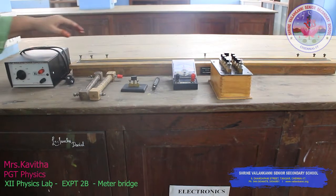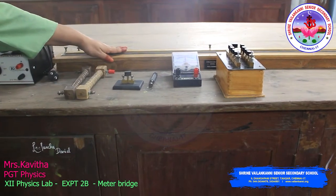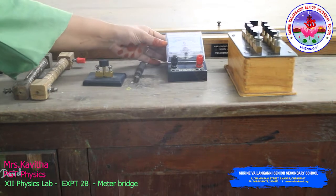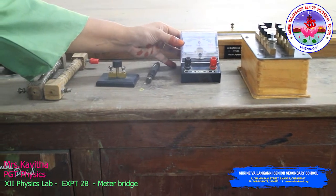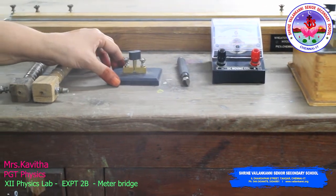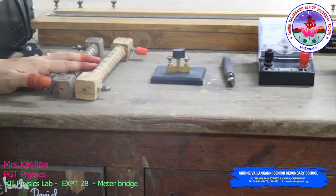Apparatus required: meter bridge, known resistance box, galvanometer, jockey, one-way key, and unknown resistance wire.